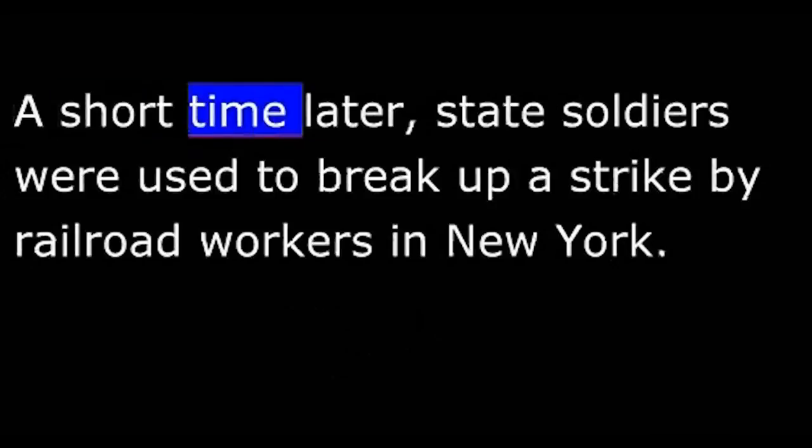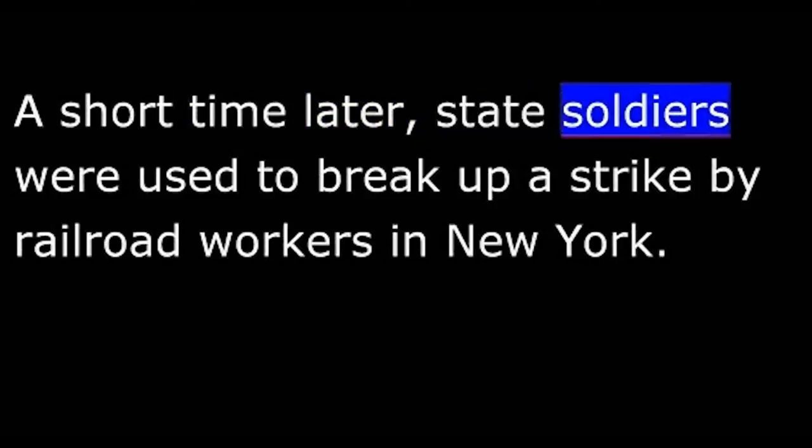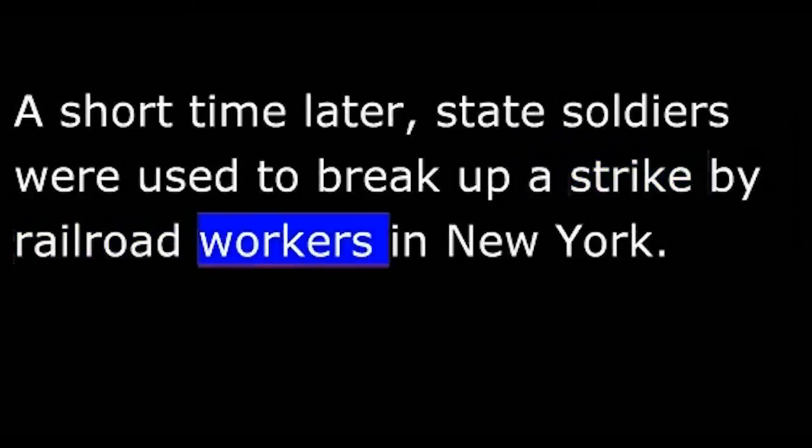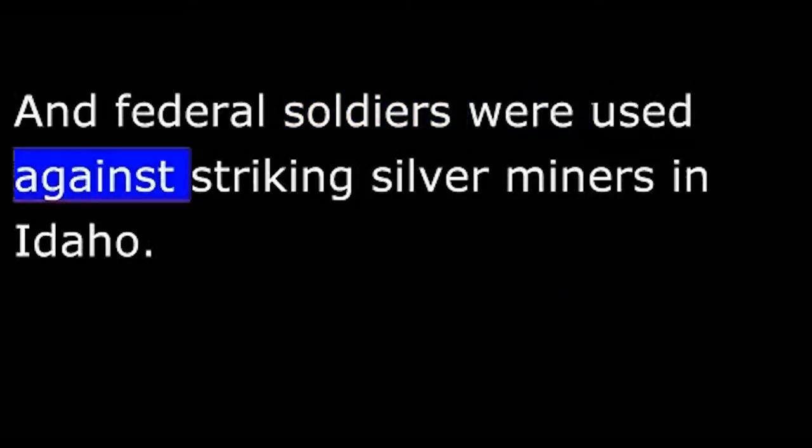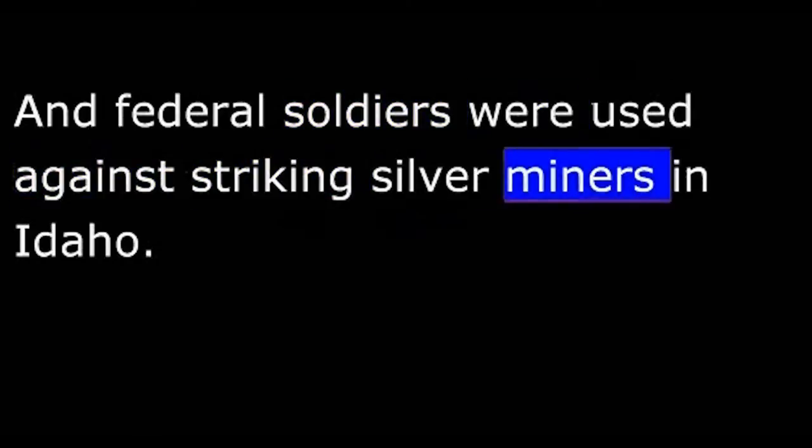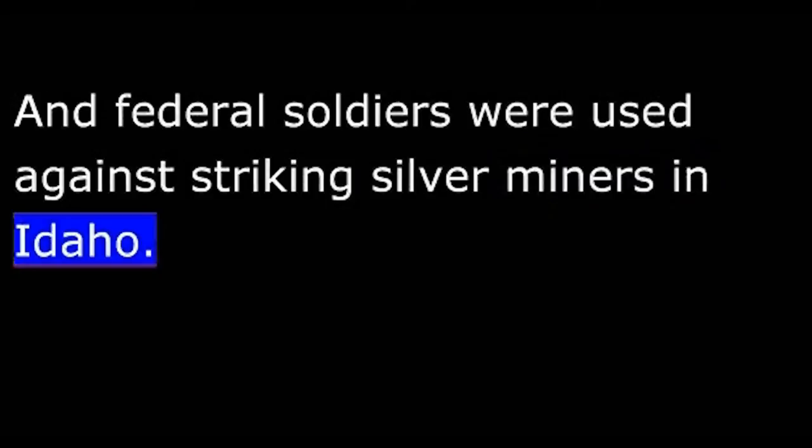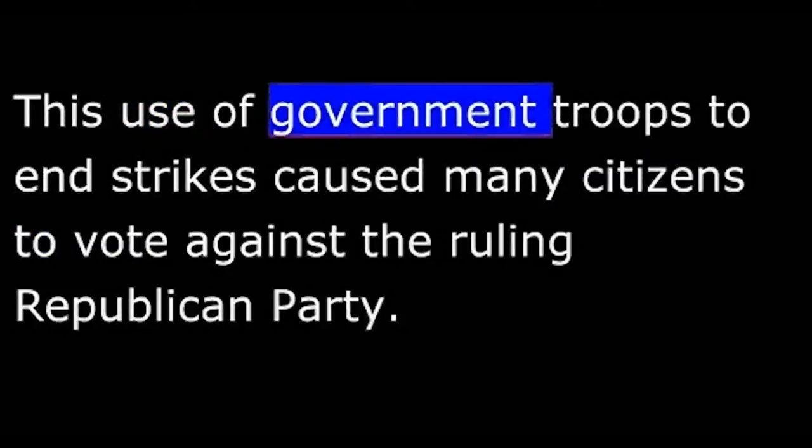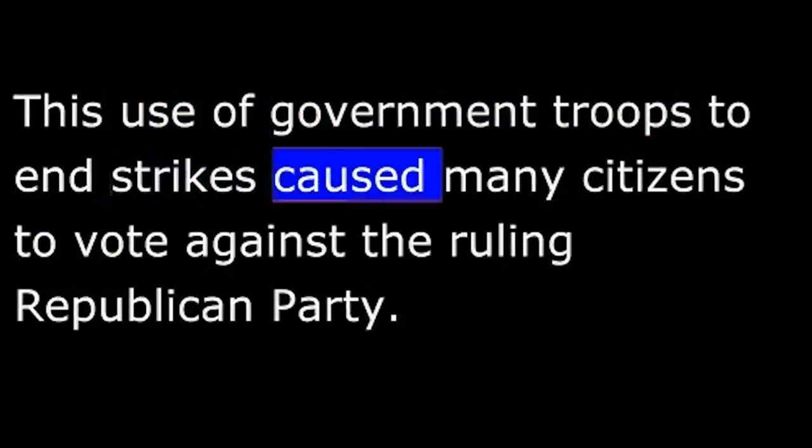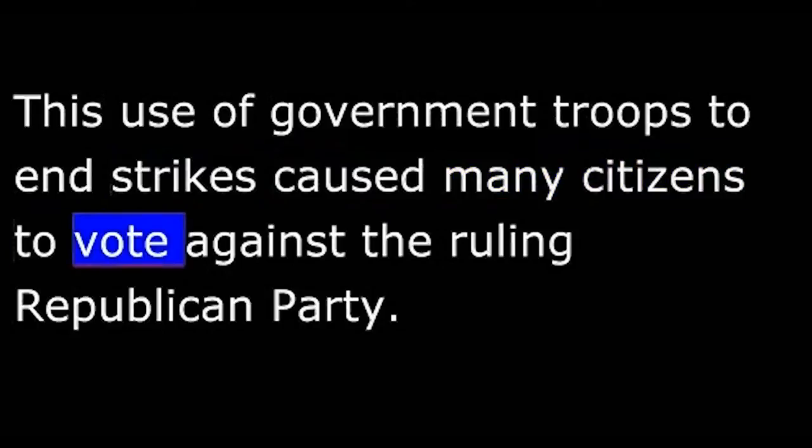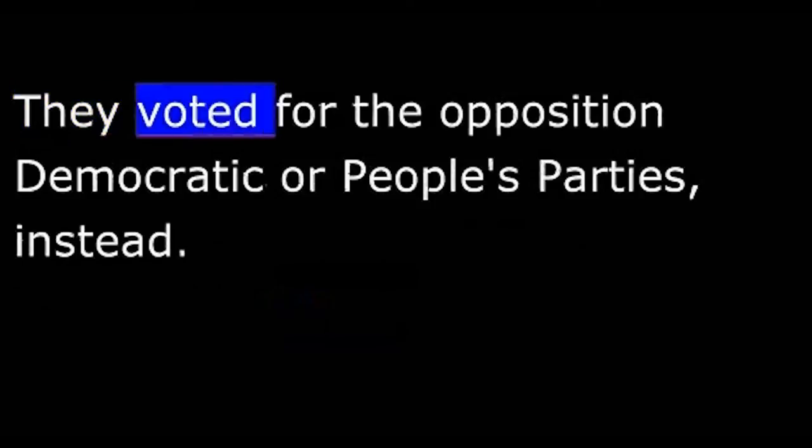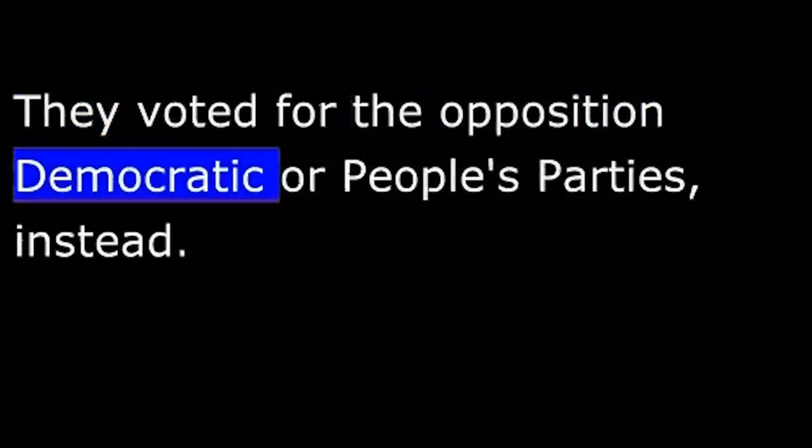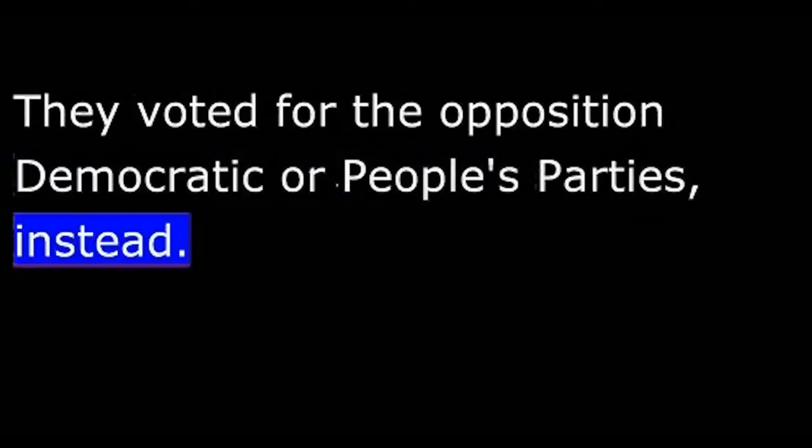A short time later, state soldiers were used to break up a strike by railroad workers in New York, and federal soldiers were used against striking silver miners in Idaho. This use of government troops to end strikes caused many citizens to vote against the ruling Republican Party. They voted for the opposition Democratic or People's Parties instead.